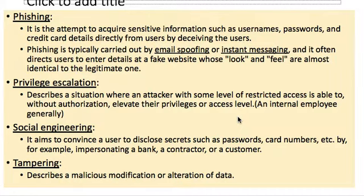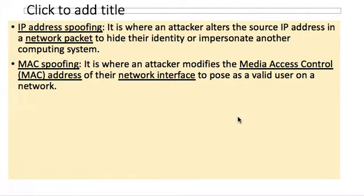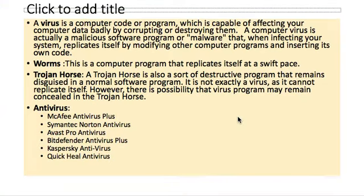Phishing attackers steal money or sensitive information from victims. Privilege escalation is when a person intentionally tries to gain administrator-level privileges and manipulate data — mainly done by insiders in an organization. Social engineering convinces users to disclose secret passwords by impersonating a bank contractor or customer. Other threats include: IP address spoofing, MAC spoofing, viruses, bombs, and Trojans. Quick Heal is an example of an Indian antivirus.